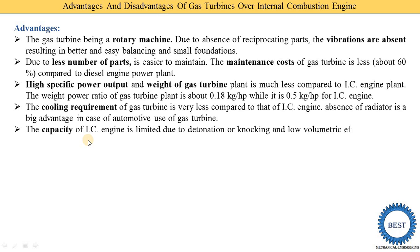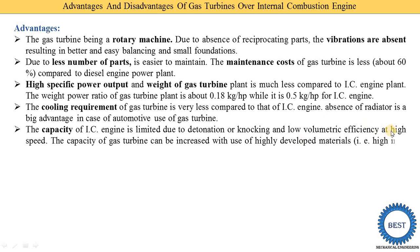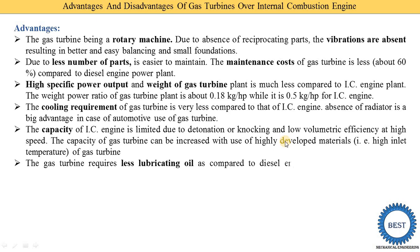The capacity of an IC engine is limited due to detonation, knocking, and low volumetric efficiency at high speeds. In contrast, the capacity of a gas turbine can be increased by using highly developed materials and achieving high inlet temperatures. With new advanced materials, we can increase the capacity of the gas turbine power plant without facing problems like detonation, knocking, or poor volumetric efficiency.